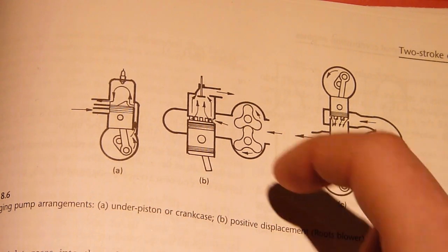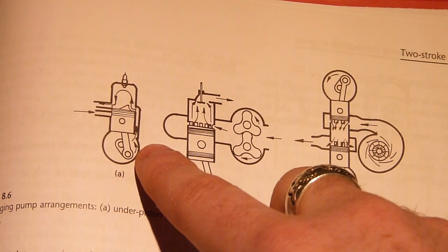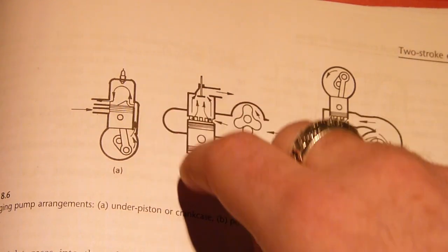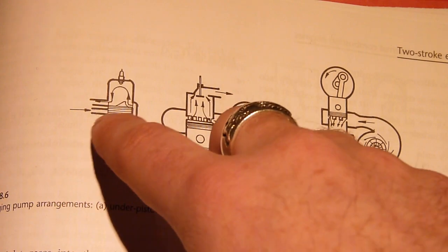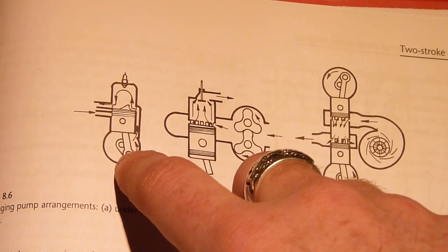Now if we go and take a supercharger and stick it directly on to the intake of this setup, the first thing that's going to happen is when the piston is starting to come down and the supercharger has already pressurized the air going into the crankcase, so this crankcase pressure is already above atmospheric pressure.